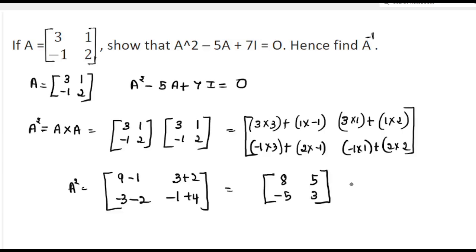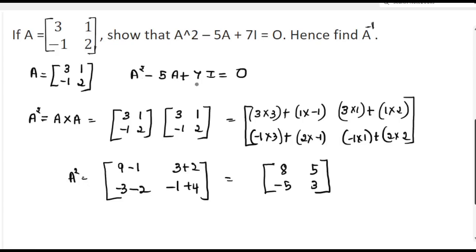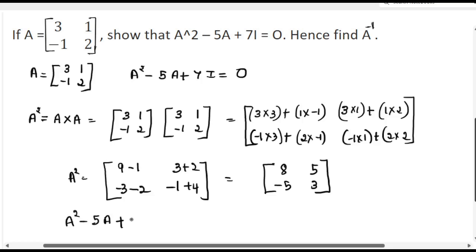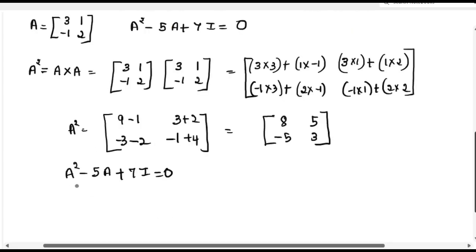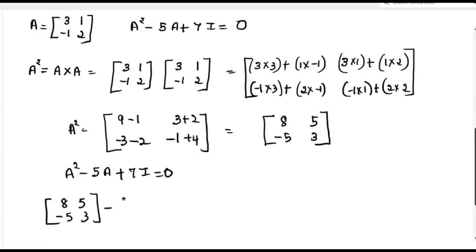So we got A squared equals [8, 5, -5, 3]. Now we will substitute this A squared into the equation. A squared is [8, 5, -5, 3] minus 5 into A, where A is [3, 1, -1, 2].